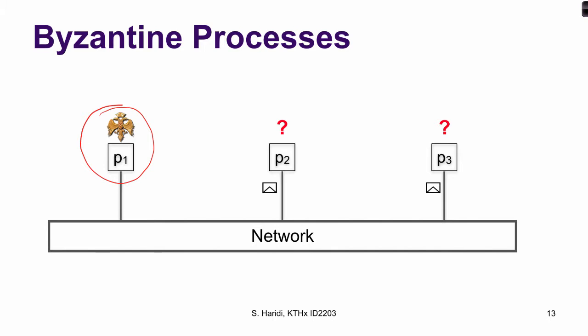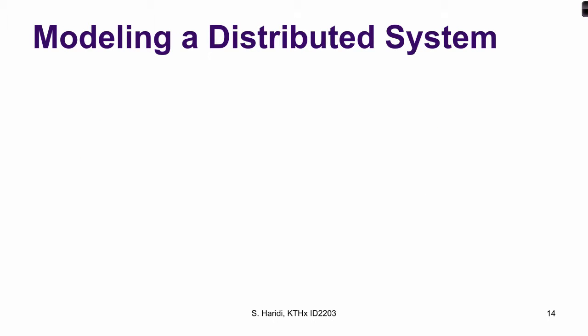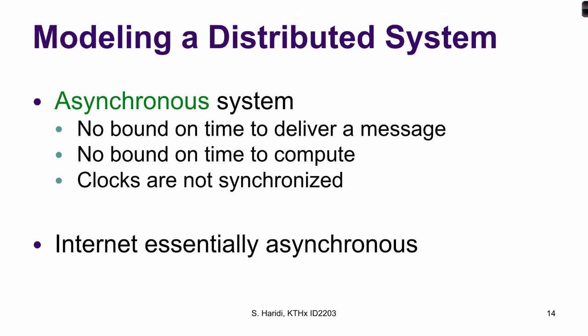So we have the timing assumptions and process and channel failure modes. When we model a distributed system, we start by looking at the weakest form of a distributed system model, called the asynchronous system model. It is the weakest model, and in a sense the most important model for implementing distributed services over the internet.